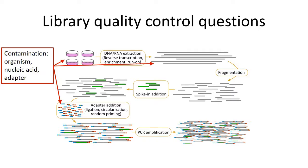You can also have adapter contamination — adapter dimers that aren't actually attached to any inserts — which is something you can assess before putting your library on a sequencer. You also need to think about your insert size, which depends on your protocol. You might have small inserts if you're doing microRNA sequencing, but for example a normal RNA-seq library would probably have inserts between 200 and 800 base pairs, fairly broadly distributed within that range. Depending on your protocol, you need to figure out what your insert size should be and confirm your library actually matches that before putting it on a sequencing machine.